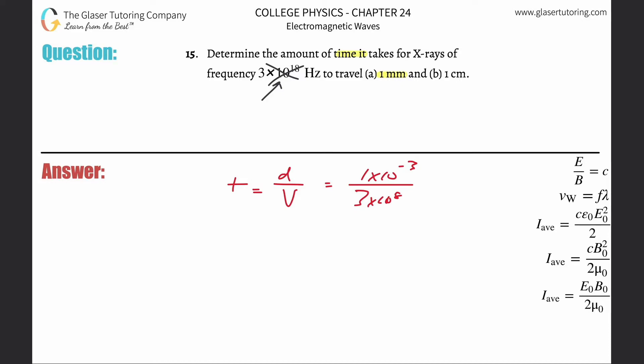So for letter (a), it's going to be 1 times 10 to the minus 3 divided by 3 times 10 to the 8. Here we get about 3.33 times 10 to the minus 12, and that's in seconds because it is a time.